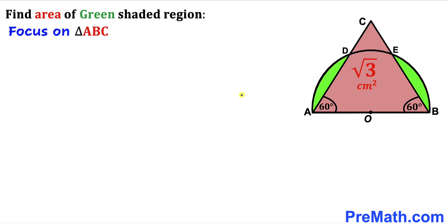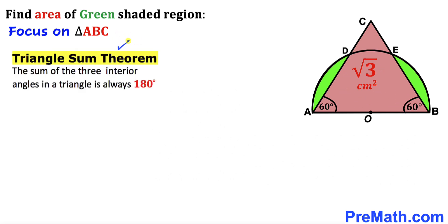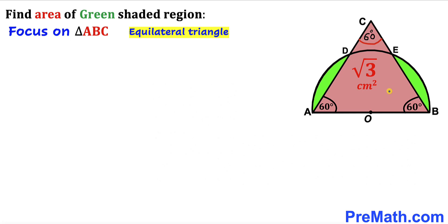Let's get started. In our first step, let's focus on triangle ABC and recall the triangle sum theorem: the sum of three interior angles in a triangle is always 180 degrees. Since angle BAC is 60° and angle ABC is 60°, angle ACB must also be 60°. Therefore triangle ABC is equilateral, and all three side lengths are equal. Let's label these side lengths as lowercase a.